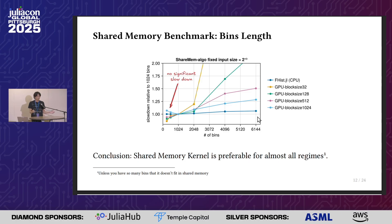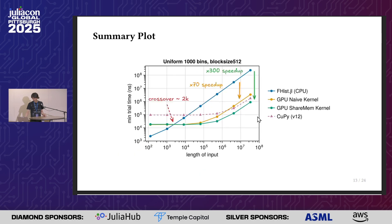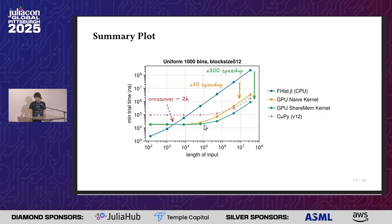Other than in particle physics where we have a million bins in multiple dimensions. So the conclusion is you should always use the shared memory approach. Here's a summary plot comparing CPU, GPU, and for reference the CuPy implementation of histogram. CuPy has a much higher kernel launching overhead, probably due to Python. The crossover happens at about 2K data points, which is not that large for a dataset you'd want to histogram — so this is quite promising when launching kernels from Julia.